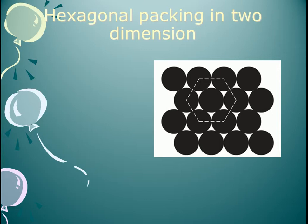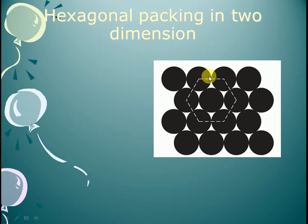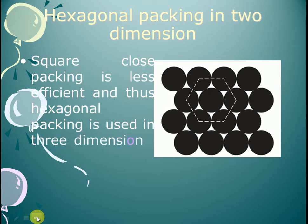In close packing in two dimensions, one atom is in close contact with others. Here you can see there are six atoms surrounding one atom, shown in yellow. Since there are six atoms in contact, the coordination number will be 6.